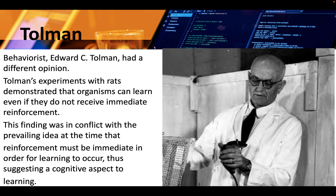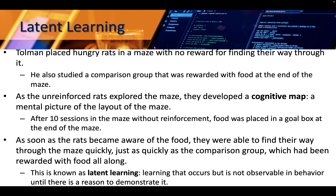Behaviorist Edward C. Tolman had a different opinion. Tolman's experiments with rats demonstrated that organisms can learn even if they do not receive immediate reinforcement. This finding was in conflict with the prevailing idea at the time that reinforcement must be immediate in order for learning to occur, thus suggesting a cognitive aspect to learning.